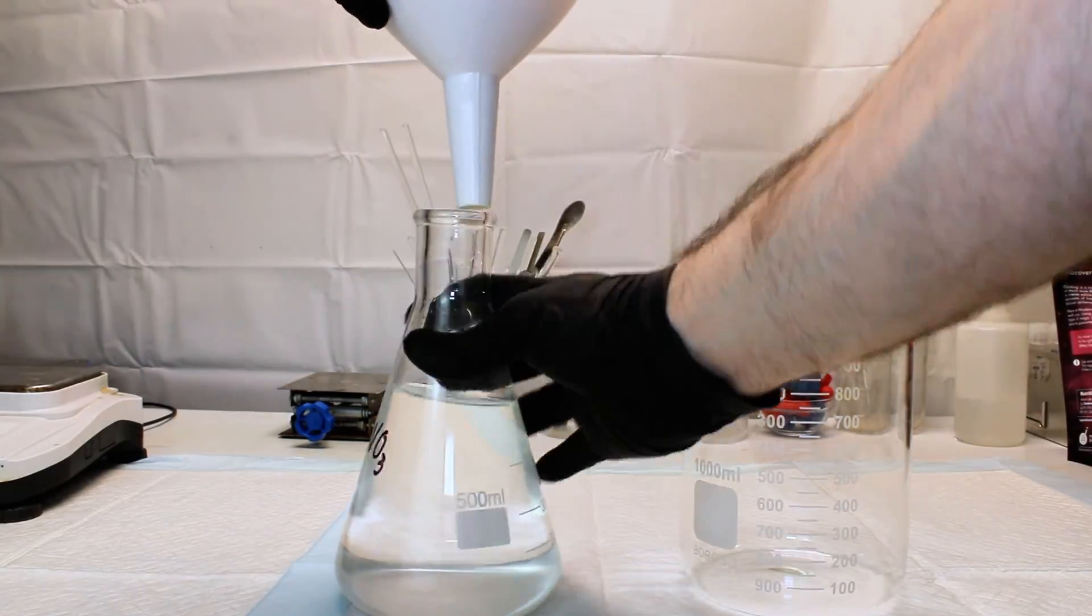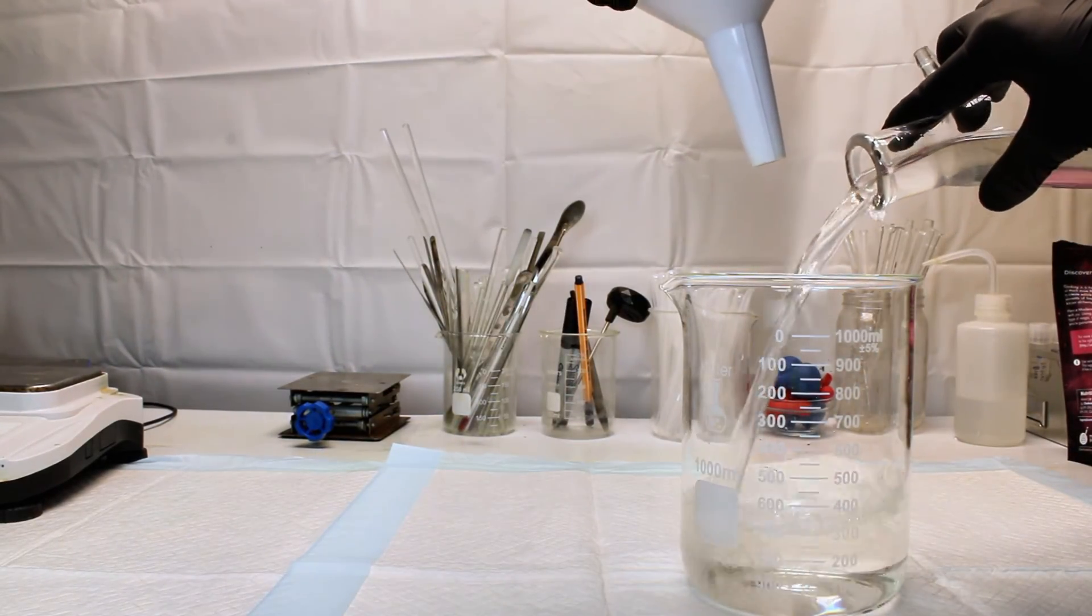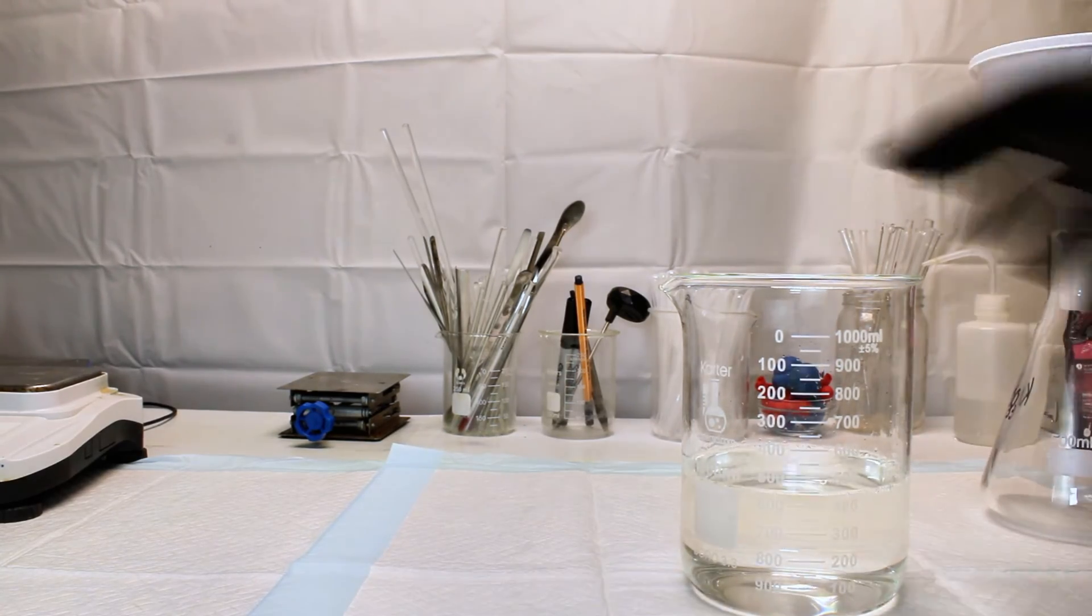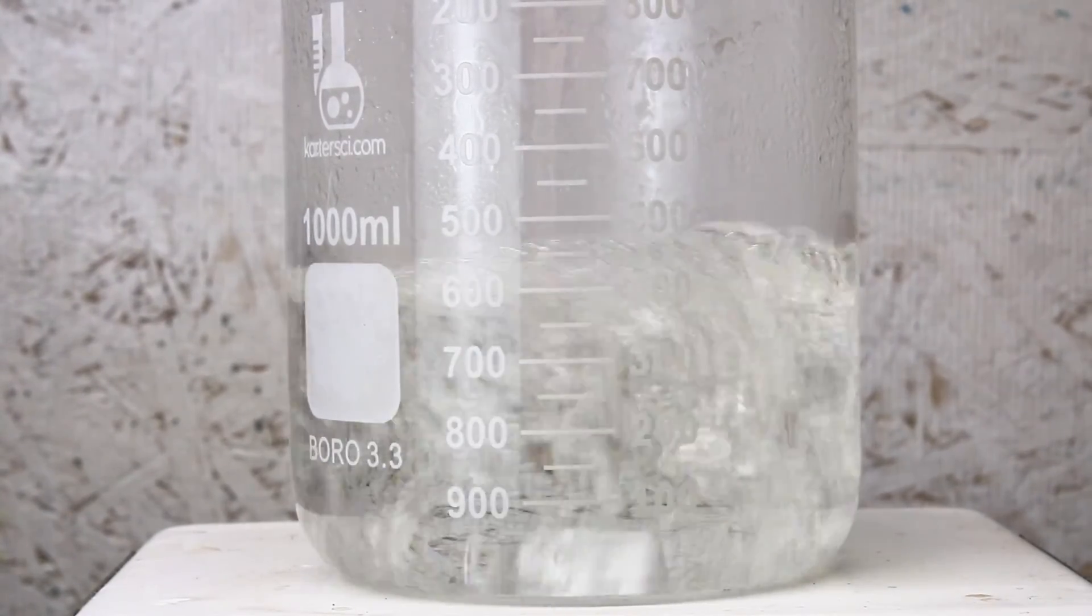At this point, it's simply a matter of filtering away the calcium carbonate, rinsing it a little bit, and boiling down the filtrate to crystallize my potassium nitrate.